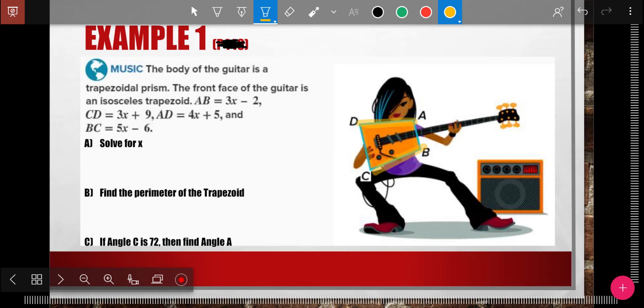And so when I go to do this, I set AD, 4X plus 5, equal to 5X minus 6 from BC.